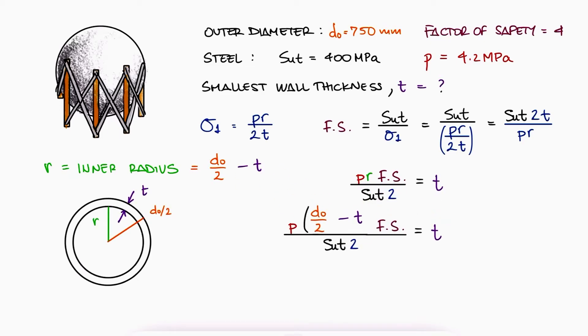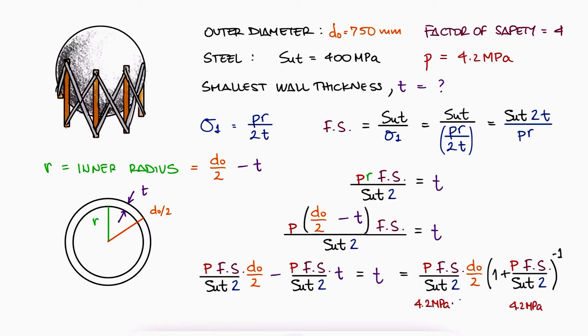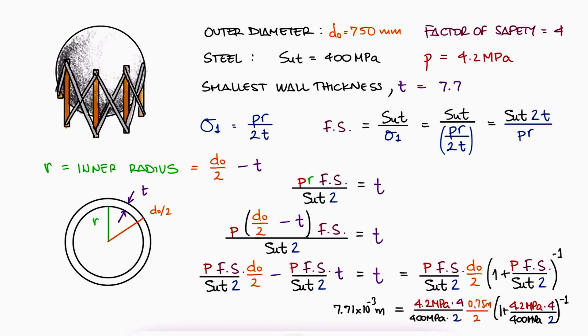Substituting this expression, we can distribute the parentheses to solve for t once again. Substituting the values, we find that the thickness is 7.71 mm.